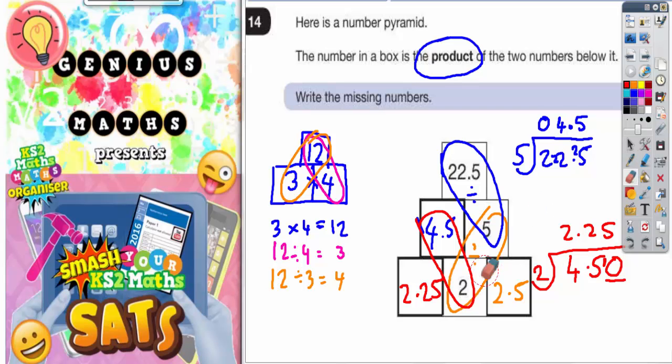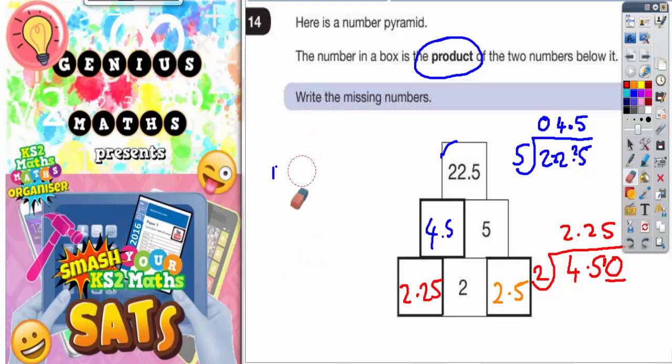Just as a quick double check, we've got all the answers now. Let's go back to the original question and remember what it said - the number in a box is the product of the 2 numbers below it. Remember 3 times 4 makes 12. Let's do some quick multiplication to double check. If you take these two here, 2 times 2.5 is 5. That works.